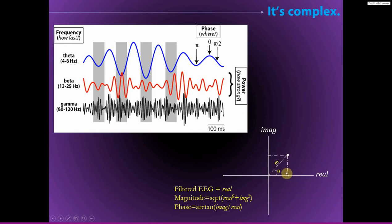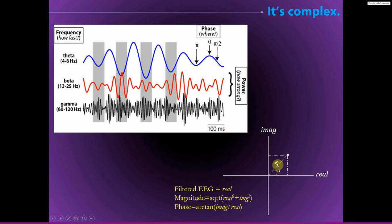The result of complex Morley wavelet convolution is a time series of complex dot products. From each dot product at each time point, we can extract three pieces of information: the magnitude (amplitude), which we can square to get power; the projection onto the real axis, which gives us the bandpass filtered signal — equivalent to applying a normal FIR bandpass filter; and the angle of the vector relative to the positive real axis, which gives us the phase angle time series.